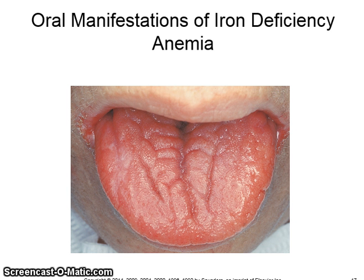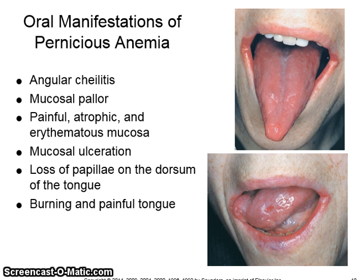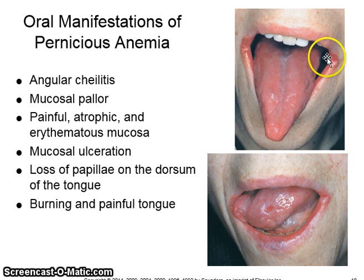This is an image of the tongue from a person who suffers from iron deficiency anemia. This is the tongue of a person with pernicious anemia. Notice the angular cheilitis on the corners — the commissures of the lip. The pallor of the mucosa, painful, atrophic, and erythematous mucosa, mucosal ulcerations, loss of papillae on the dorsum of the tongue, and they also can have a burning and painful tongue.